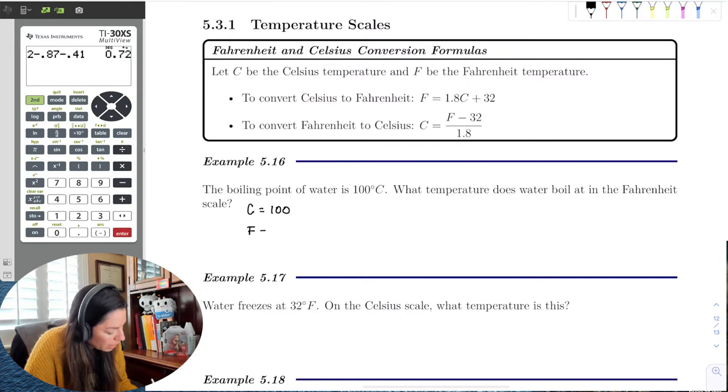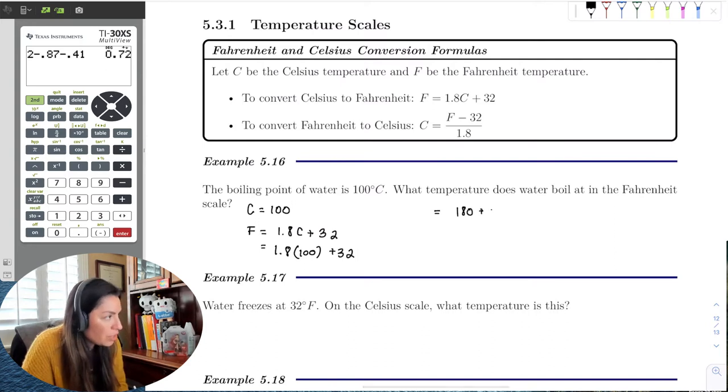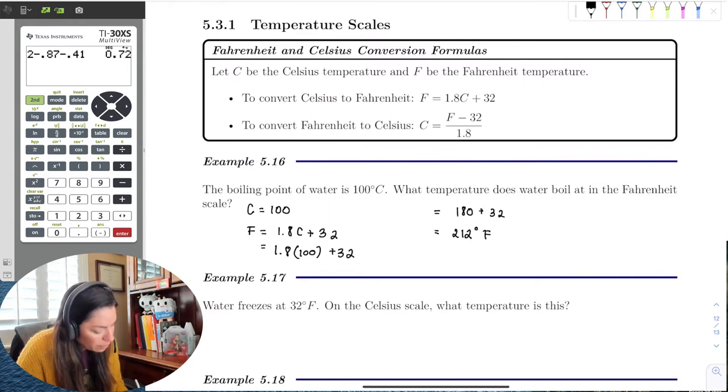Fahrenheit is equal to 1.8 times Celsius plus 32. So it'll be 1.8 times 100 plus 32. That's just equal to 180 plus 32 which is 212 degrees Fahrenheit. And we do put the little degree symbol in our final answer, and the F just like here, so that way we know which temperature it is.